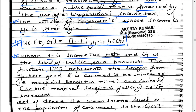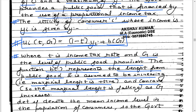T is the income tax rate and G is the level of public good provision. The benefit function B represents the benefit from the public good, and is assumed to be increasing — so B'(G) is positive — and concave, meaning the marginal benefit is positive but decreasing. As public good provision increases, you derive more benefit from it but at a decreasing rate.